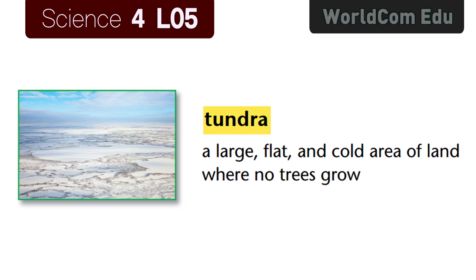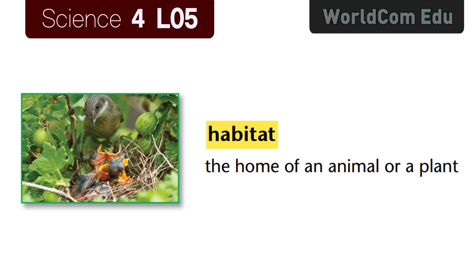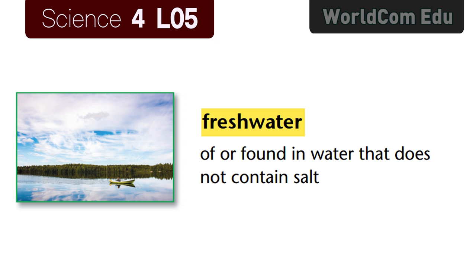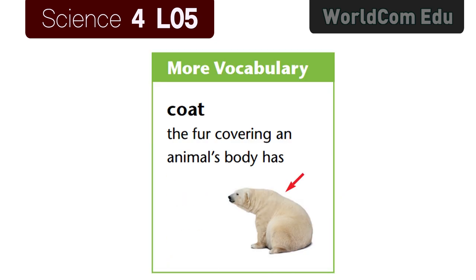Lesson 5: Habitats. Vocabulary review: Tundra — a large, flat, and cold area of land where no trees grow. Woodland — an area of land on which many trees grow. Habitat — the home of an animal or a plant. Salt water — of or found in water that contains salt. Fresh water — of or found in water that does not contain salt. Moist — a little bit wet. Coat — the fur covering an animal's body.